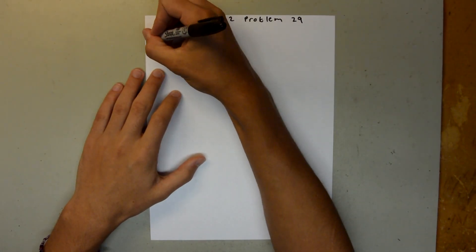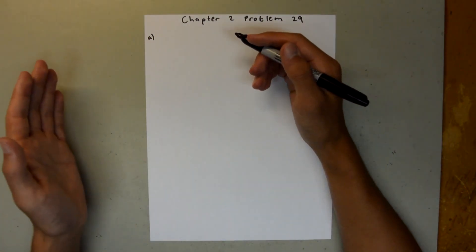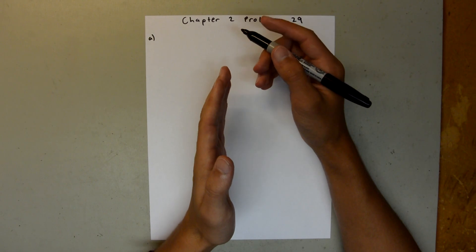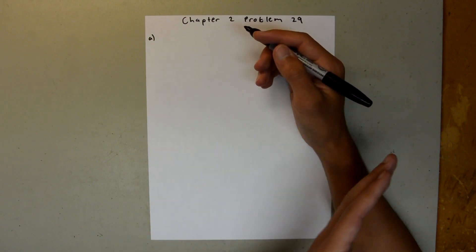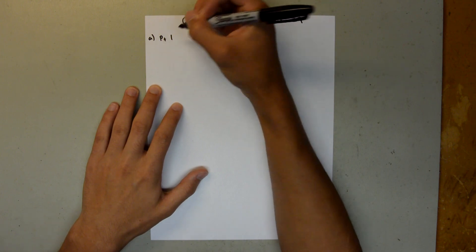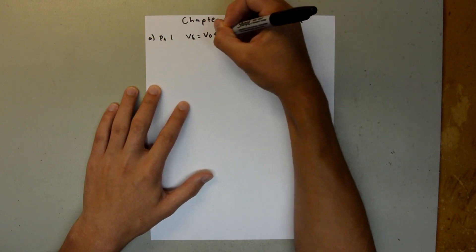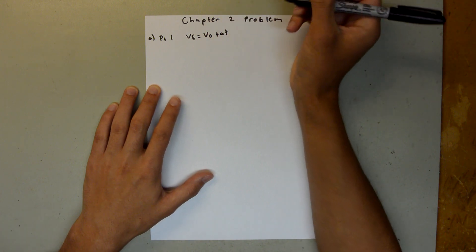So for Part A, I want to split this up into two separate pieces: the piece where it starts from rest and goes to the velocity, and then the piece where it goes from that velocity to rest again. So for Part 1, we can use V final equals V initial plus AT, and we need to solve for T.